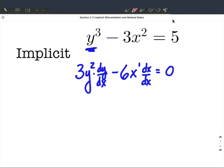Now, in thinking about simplifying this down, the dx over dx just becomes a 1. So we're going to be left with 3y squared dy/dx minus 6x equals 0.